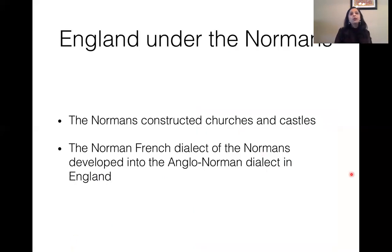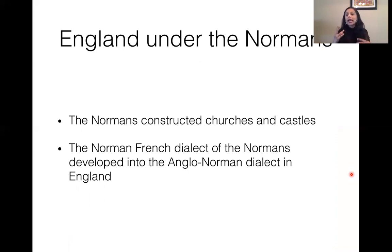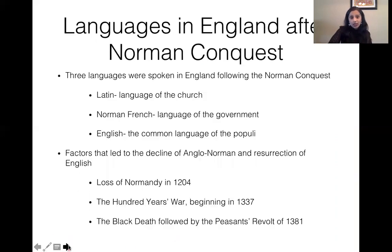What were some of the changes that happened in England under the Norman Conquest? The big change was that a lot more churches and castles were constructed by the Normans, and the Norman French dialect of the Normans who came from Normandy developed into an Anglo-Norman dialect of England. So there was a lot of influence from Old French in England during this era.